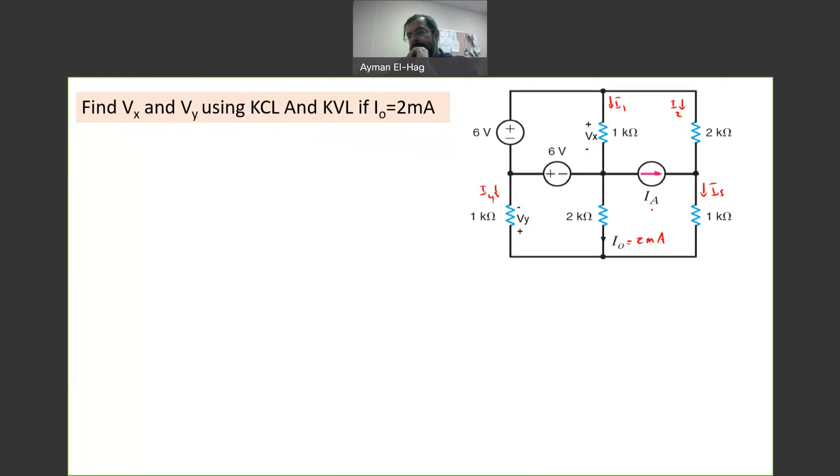Okay, now this I0 is known to me, and this is IA. So we have 1, 2, 3, 4, 5 different currents. I can come up with 5 equations using KCL and KVL and solve them, and you will get the right answer if your equations were correct.